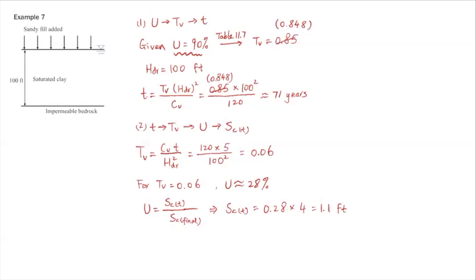The HDR maximum drainage distance we already showed is 100 feet, the thickness of the clay layer. This is a one-way drainage case. Substituting into the small t equation, we get the time it takes to reach 90% consolidation is about 71 years.